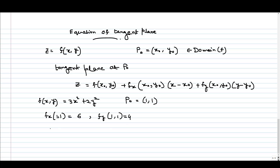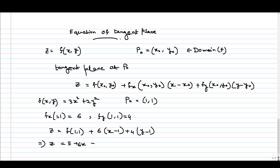The equation of the tangent will be given by z equal to f(1, 1) plus 6(x minus 1) plus 4(y minus 1). So we get z equal to f(1, 1) — which is 5 — plus 6x minus 6 plus 4y minus 4. This gives us z equal to 6x plus 4y minus 5.